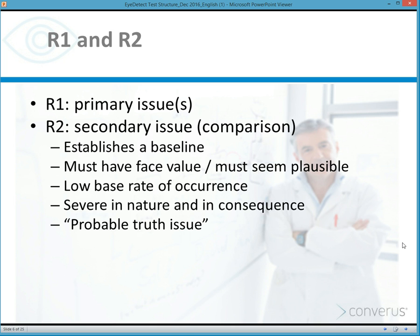When you establish a baseline reaction for the examinee against a serious crime with serious consequences and see no reaction, then when you're asking the examinee about the primary issue and there are reactions, you get this differential type of reaction, and that helps iDetect determine deception in examinees.